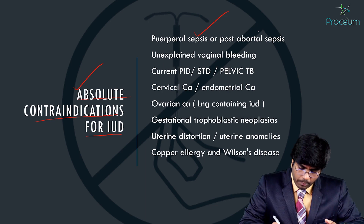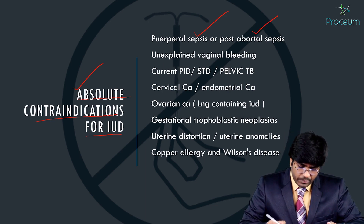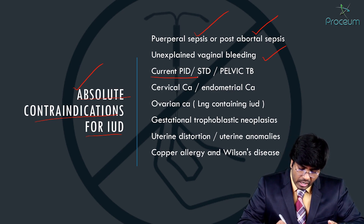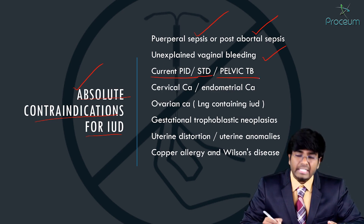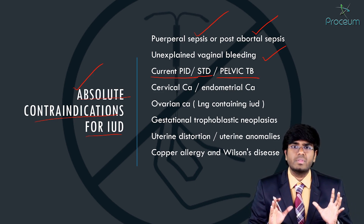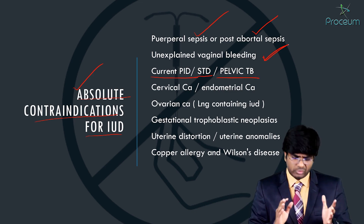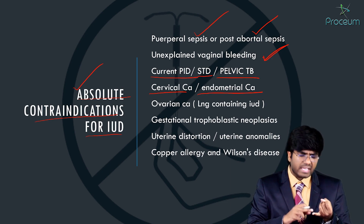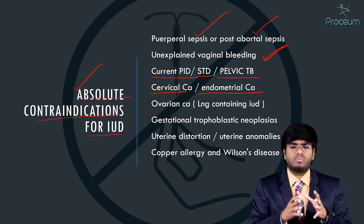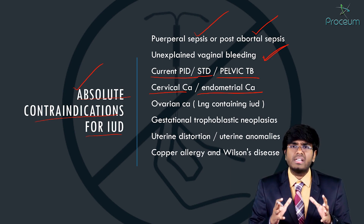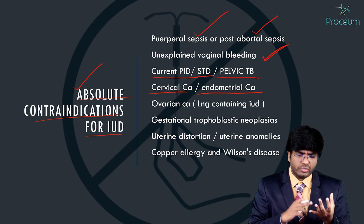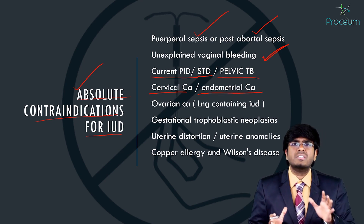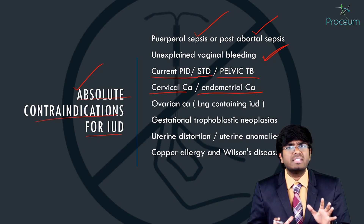Absolute contraindications for IUD insertion include: puerperal sepsis or post-abortal sepsis, unexplained vaginal bleeding, current PID or sexually transmitted disease, pelvic TB, cervical cancer, or endometrial cancer. In cases of cervical or endometrial cancer, hysterectomy may be required — do not place an intrauterine contraceptive device.